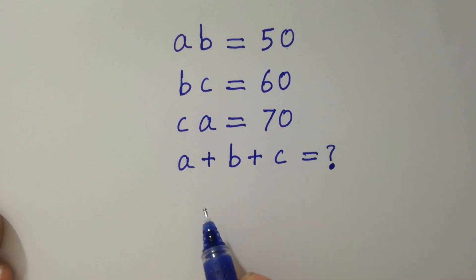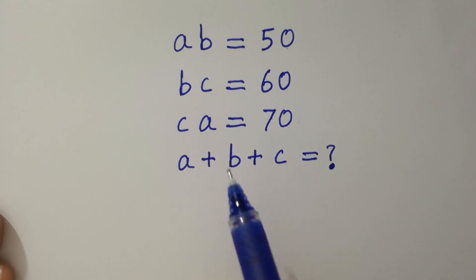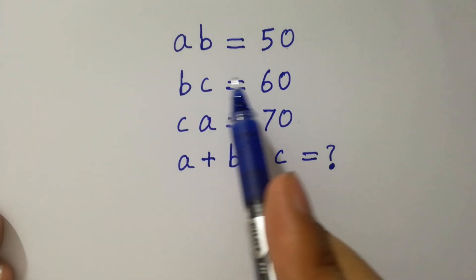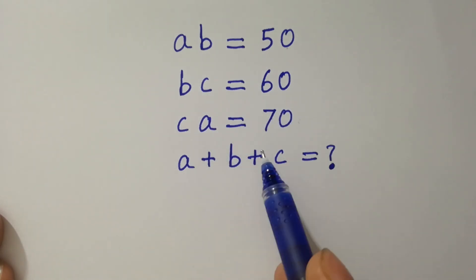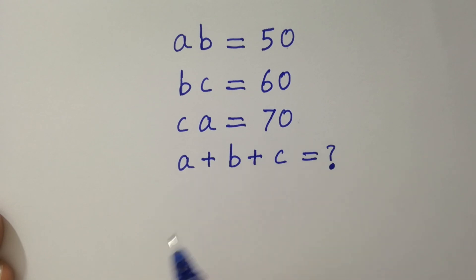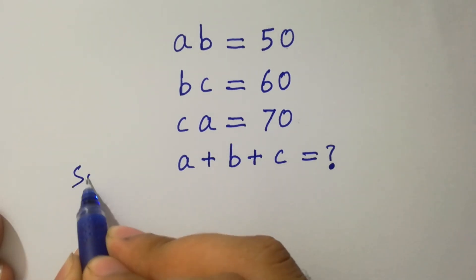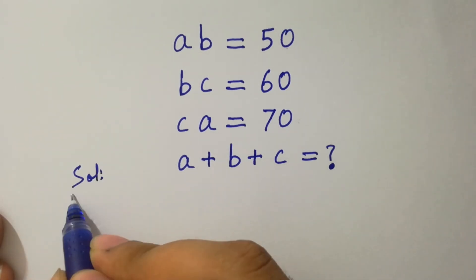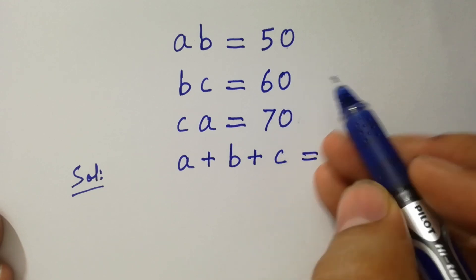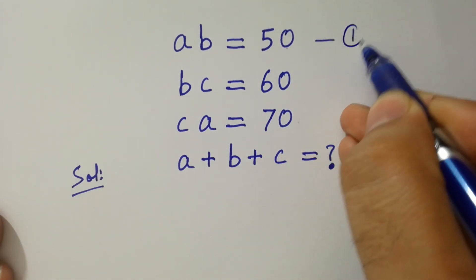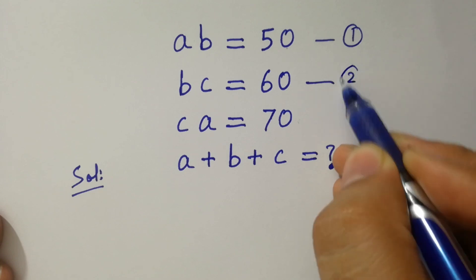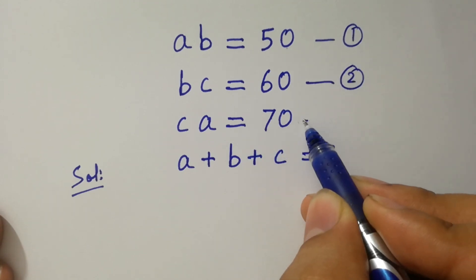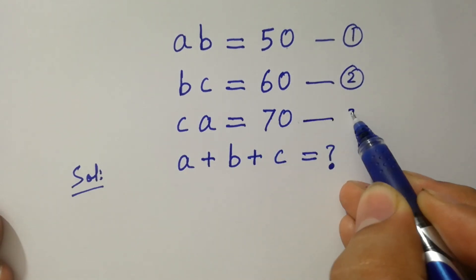Hello friends. Find the value of a plus b plus c if ab equals 50, bc equals 60, and ca equals 70. Let's have a solution. Let ab equals 50 be the first equation, bc equals 60 be the second equation, and ca equals 70 be the third equation.